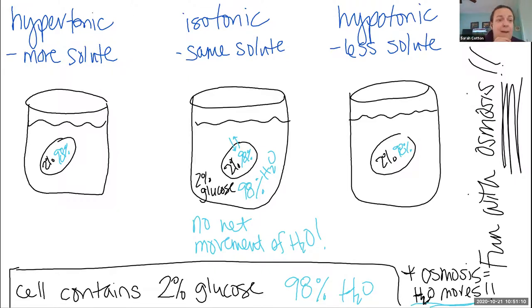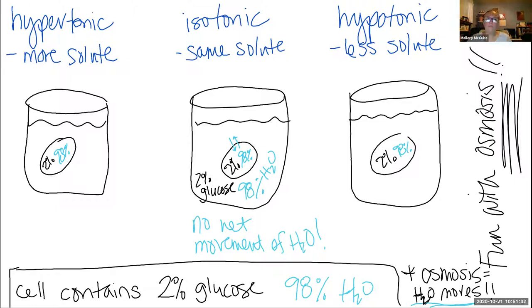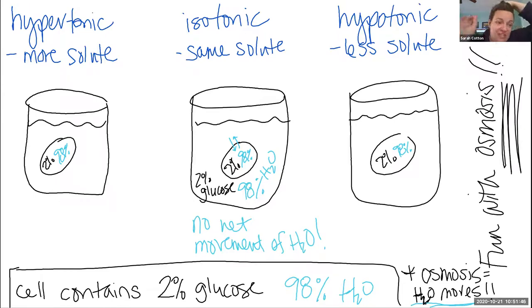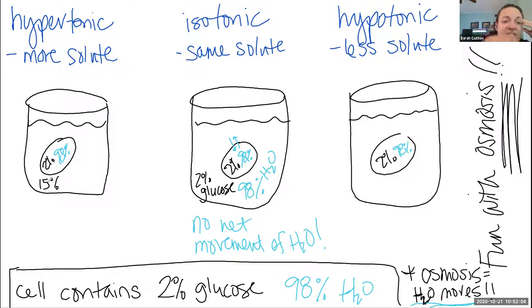If something is hypertonic, then that means — if a solution is hypertonic to something else — it means more solute. So what do we want to do for 'more'? Let's make it obvious. Instead of two percent glucose, let's make it 15 percent glucose. This solution that the cell is sitting in is a hypertonic solution because it has 15 percent glucose, which is way more than two percent glucose.